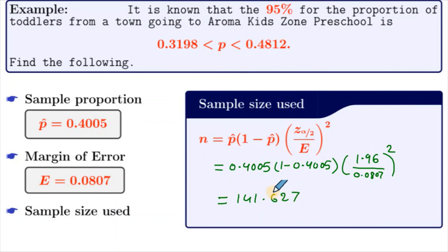Whenever we are finding sample size or n, we will always round up. So this is approximately equal to 142. So that is our sample size.